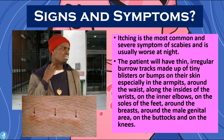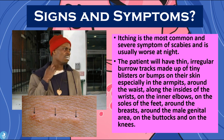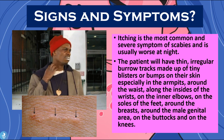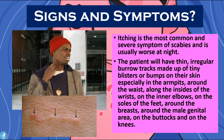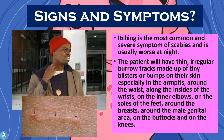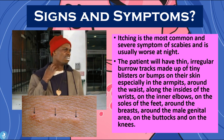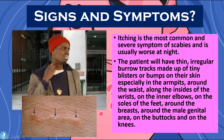One of the main signs of the disease is that the patient will have thin, irregular burrow tracks made up of tiny blisters or bumps on their skin, especially in the armpits, around the waist, along the insides of the wrists, on the inner elbows, on the soles of the feet, around the breast, around the male genital area, on the buttocks, and on the knees. This is basically what those burrow tracks look like.